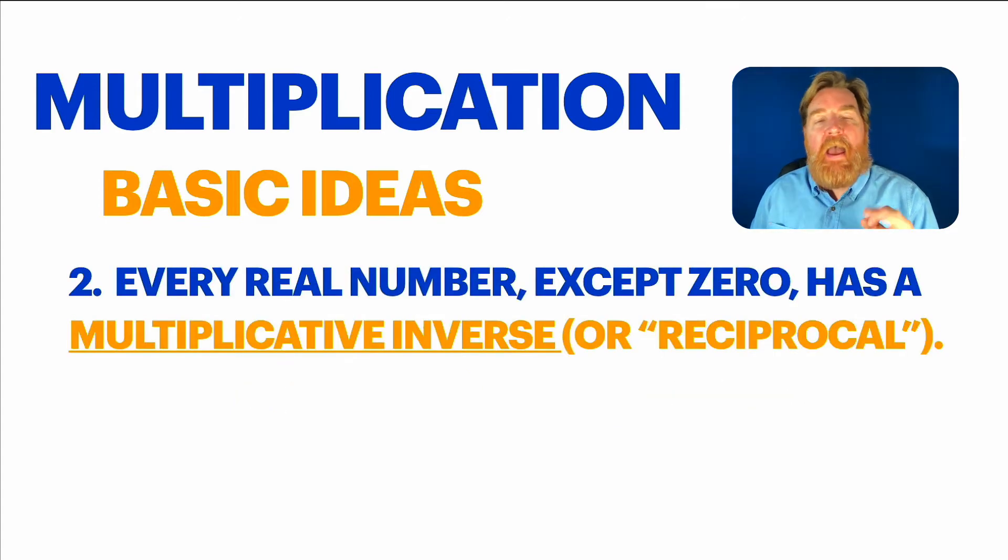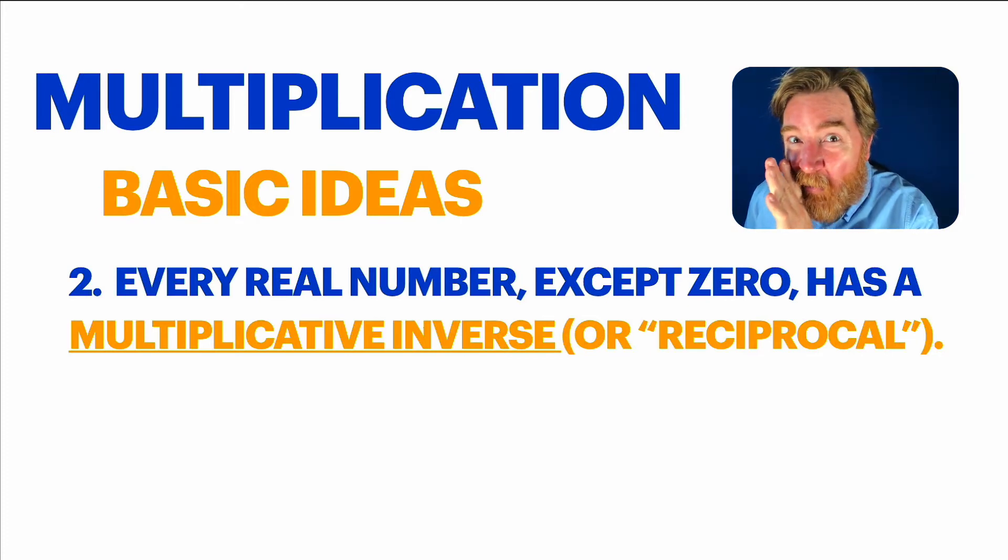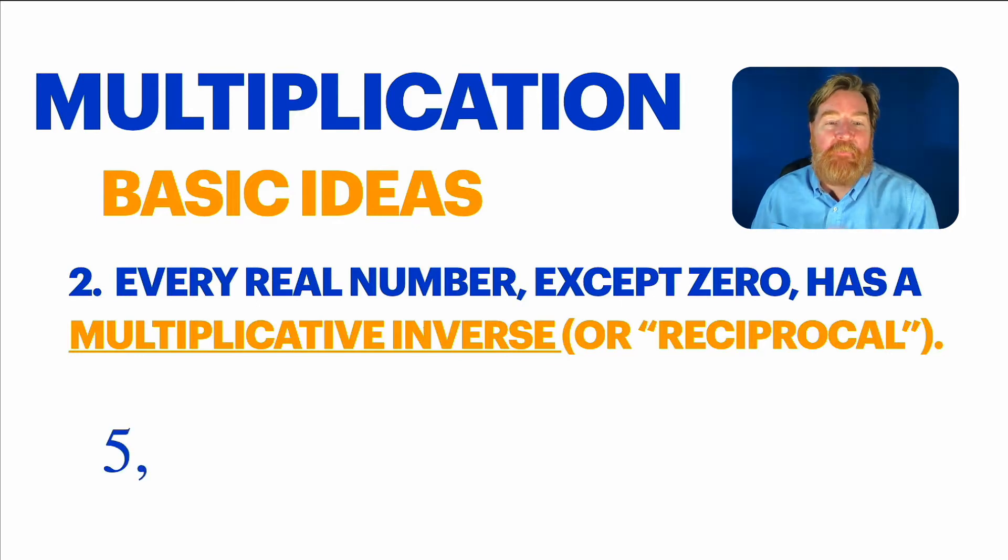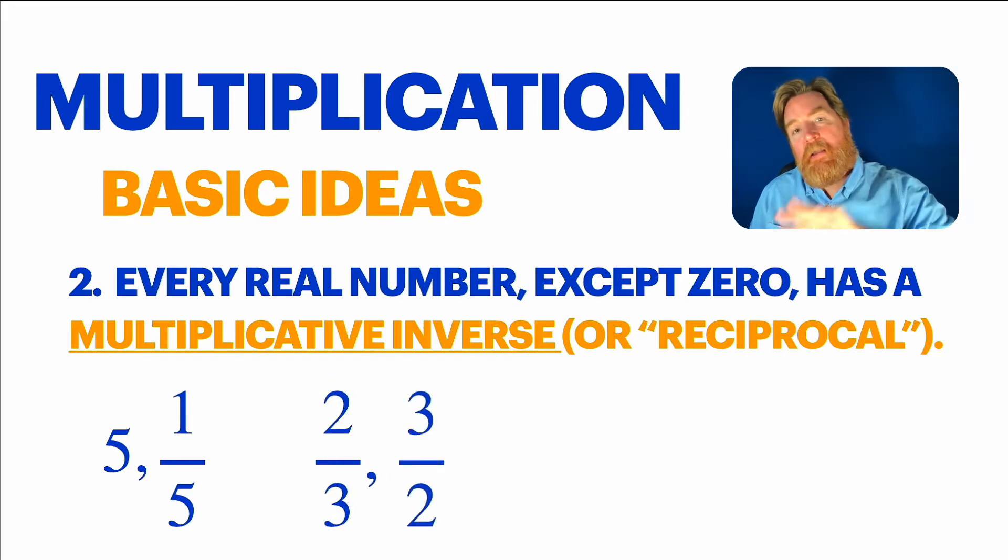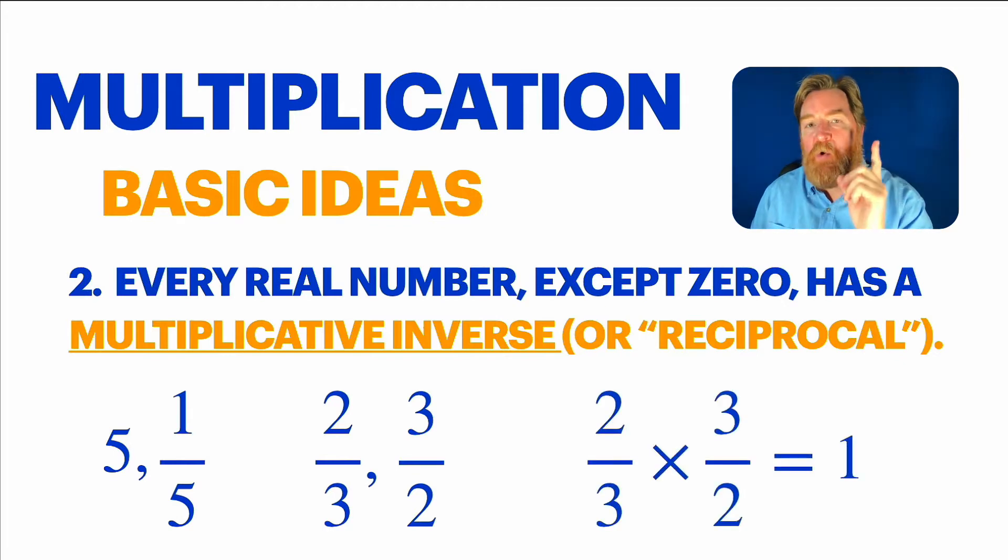Number two, every real number, except zero, has a multiplicative inverse. Sometimes we call it the reciprocal. And other times we call it the flip. For example, for five, the reciprocal is one fifth. And for the number two thirds, its reciprocal is three halves. And what's really cool about a number and its reciprocal, when you multiply them together, you always get one.